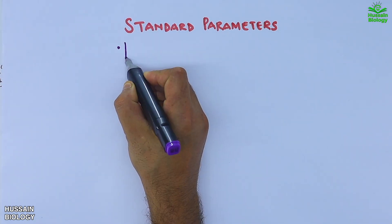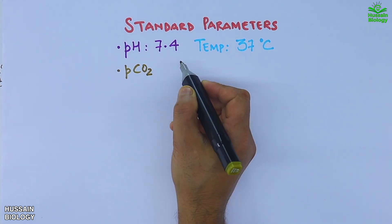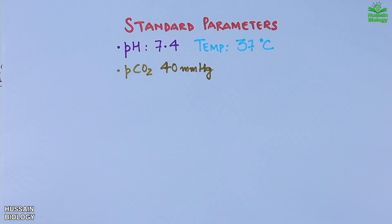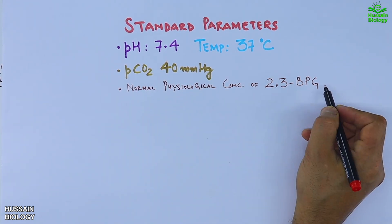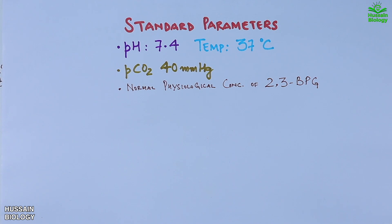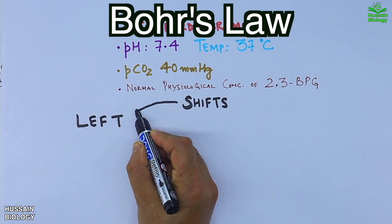The standard parameters for the curve are: pH 7.4, temperature 37°C, partial pressure of carbon dioxide (PCO2) at 40 mmHg, and normal physiological concentration of 2,3-BPG. These are considered the baseline conditions under which the standard oxyhemoglobin dissociation curve is drawn. Any change in these factors will shift the curve either to the left or to the right.